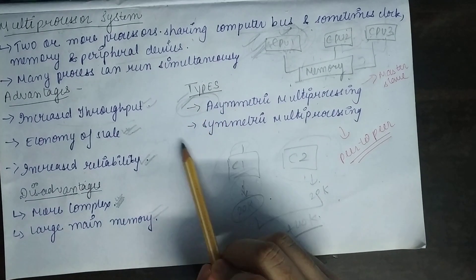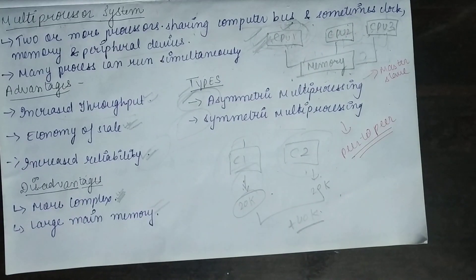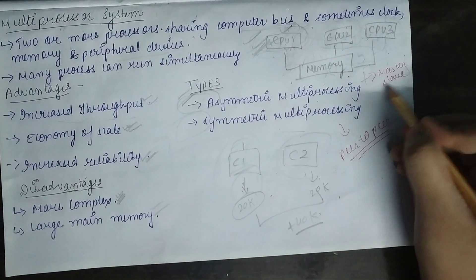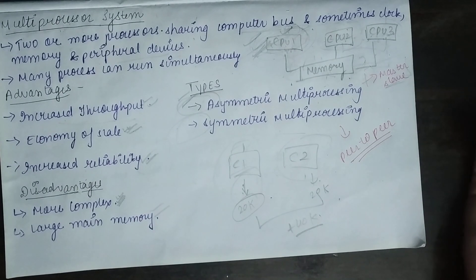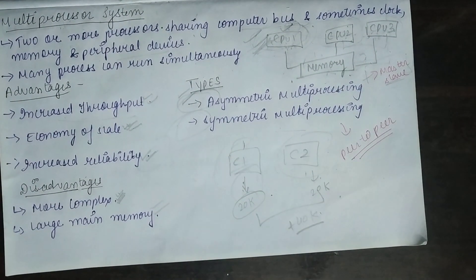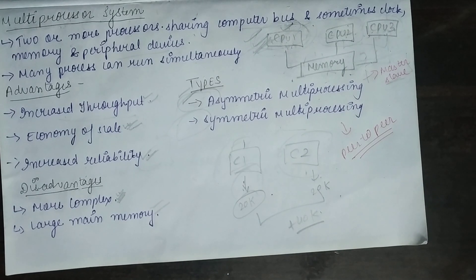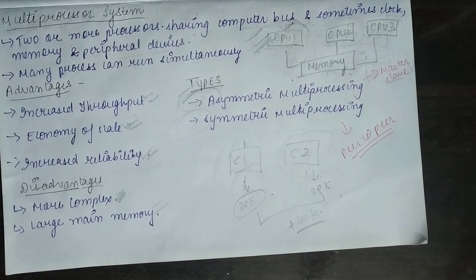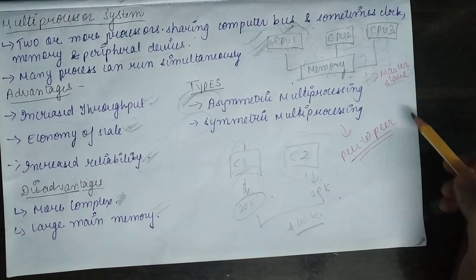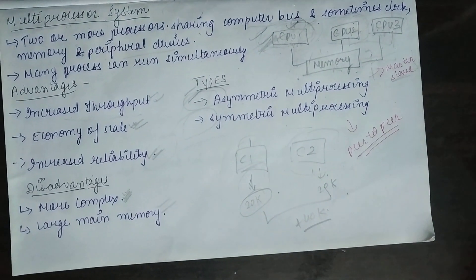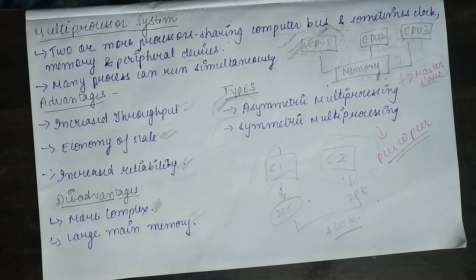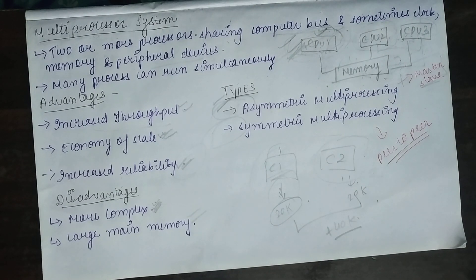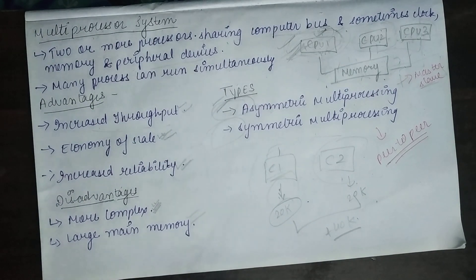There are two types of multi-processor systems. In asymmetric multiprocessing, there is a master-slave relationship: a boss processor controls the system, and other processors either have predefined tasks or look to the boss for instructions. In symmetric multiprocessing, there is a peer-to-peer relationship — all processors are at the same level and all can perform any task within the operating system.